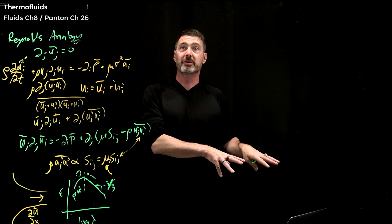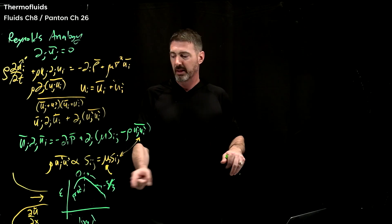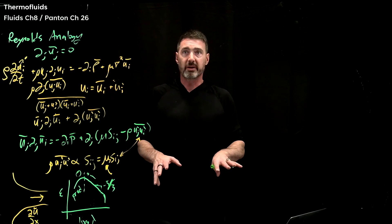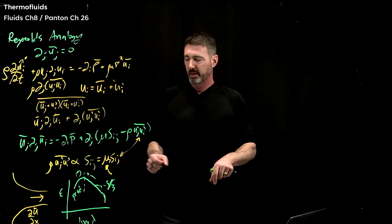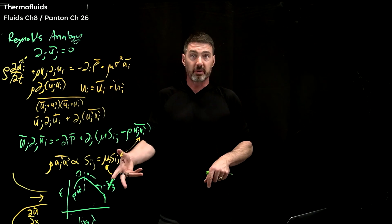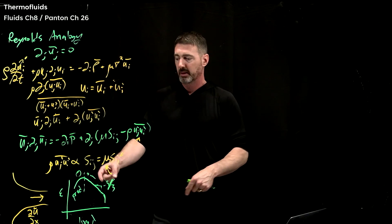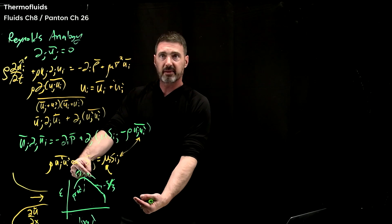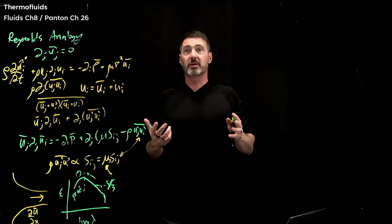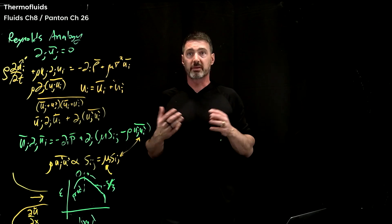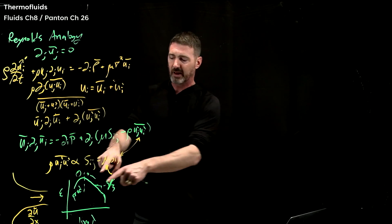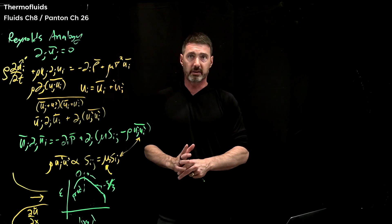The eddies are getting smaller, and eventually dissipation kicks in and smears it out. As your Reynolds number increases — which we've talked about — what happens is the size of this extent grows. One of the highest Reynolds number flows is actually flow over a submarine at around 10 to the 9, so the range of scales is quite gnarly.